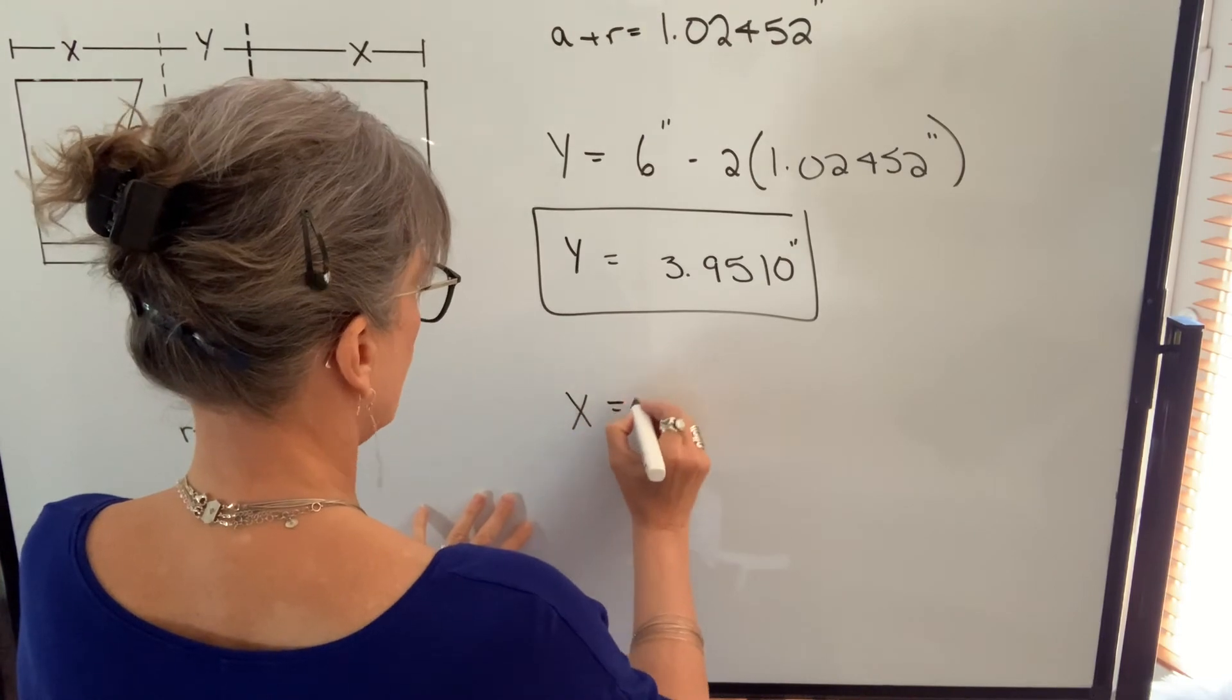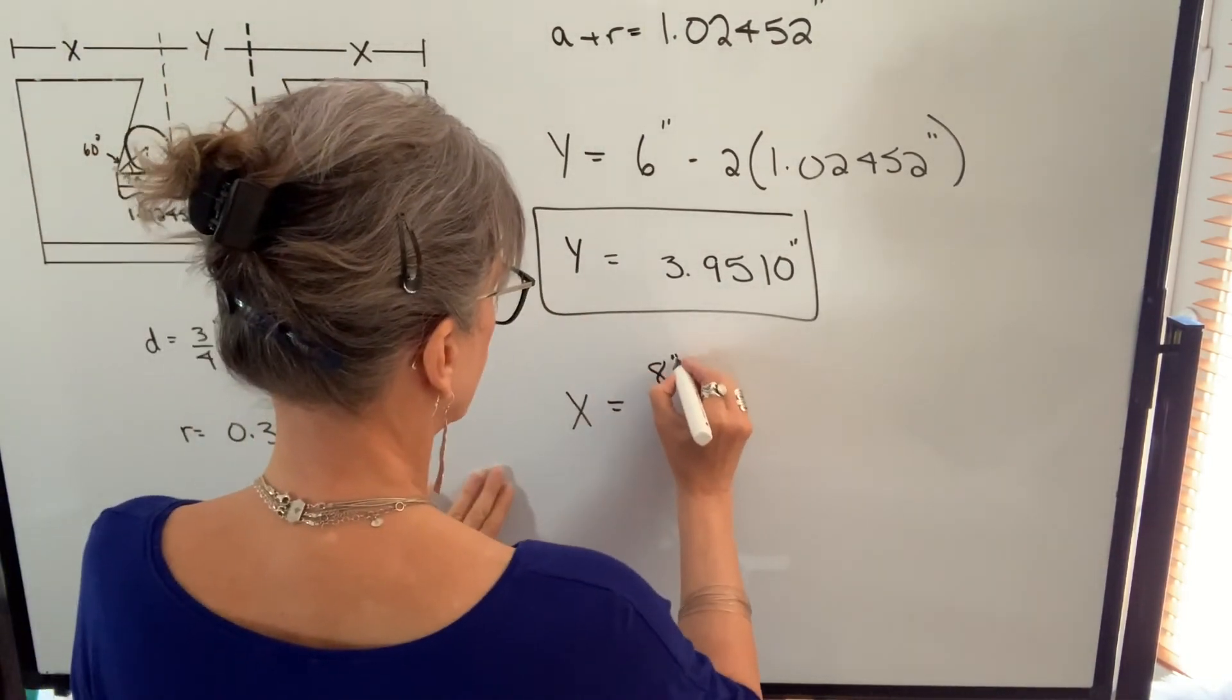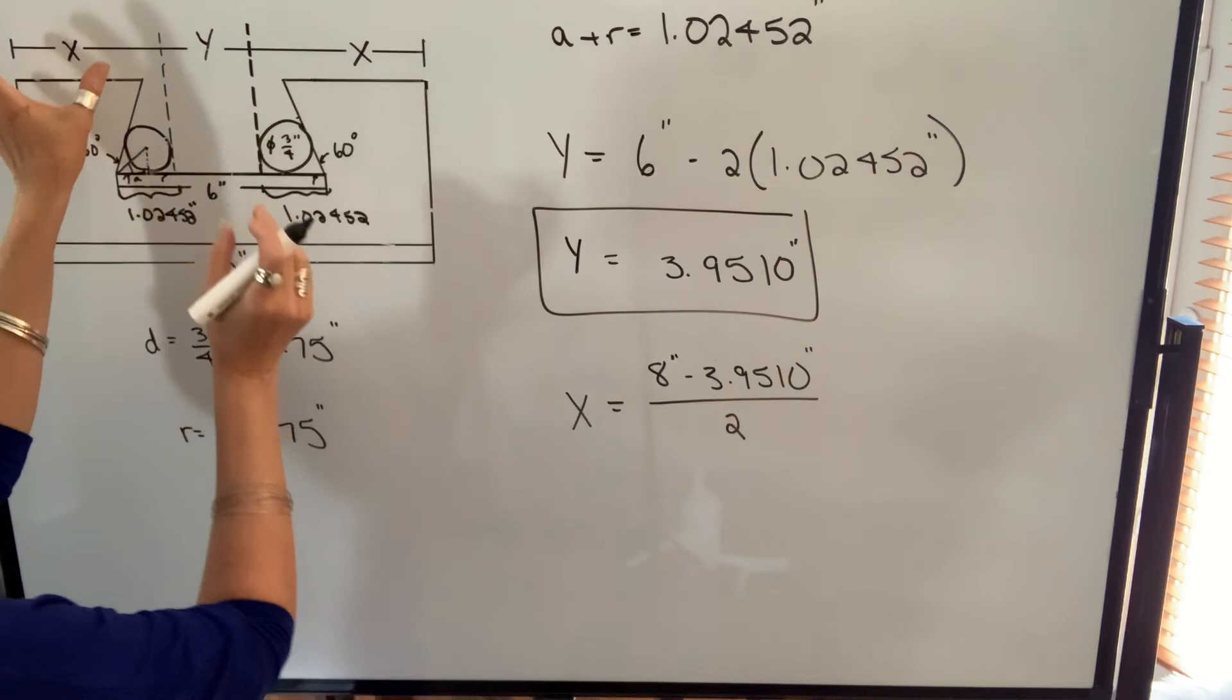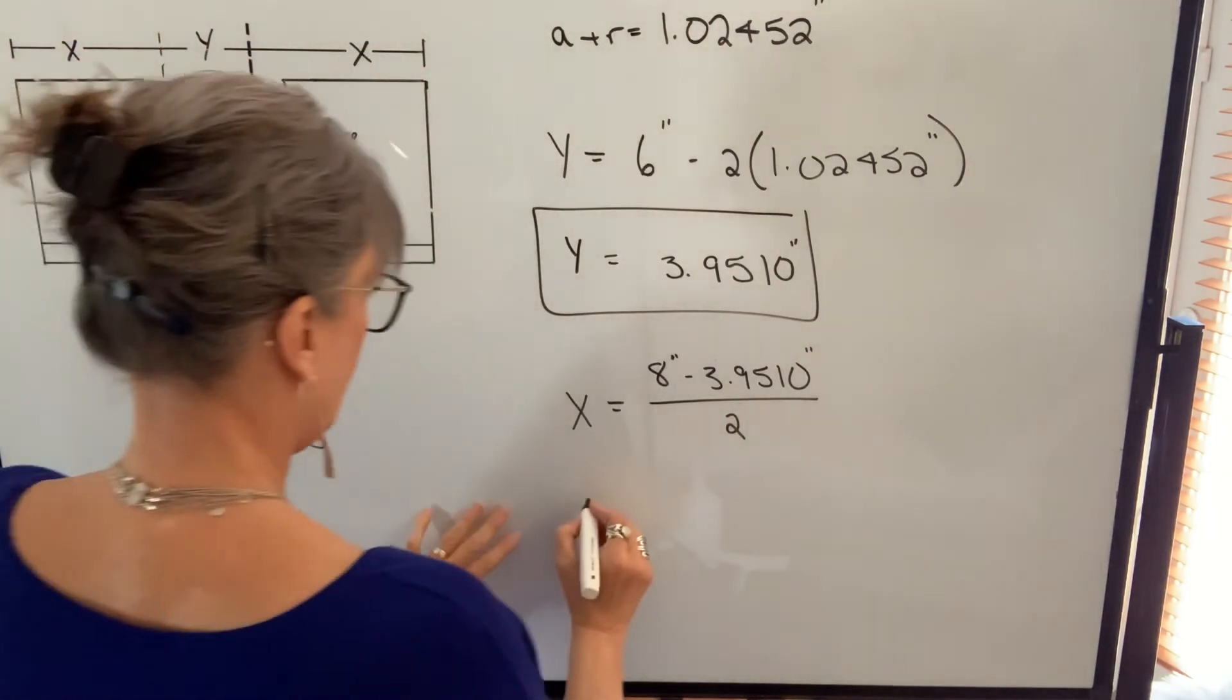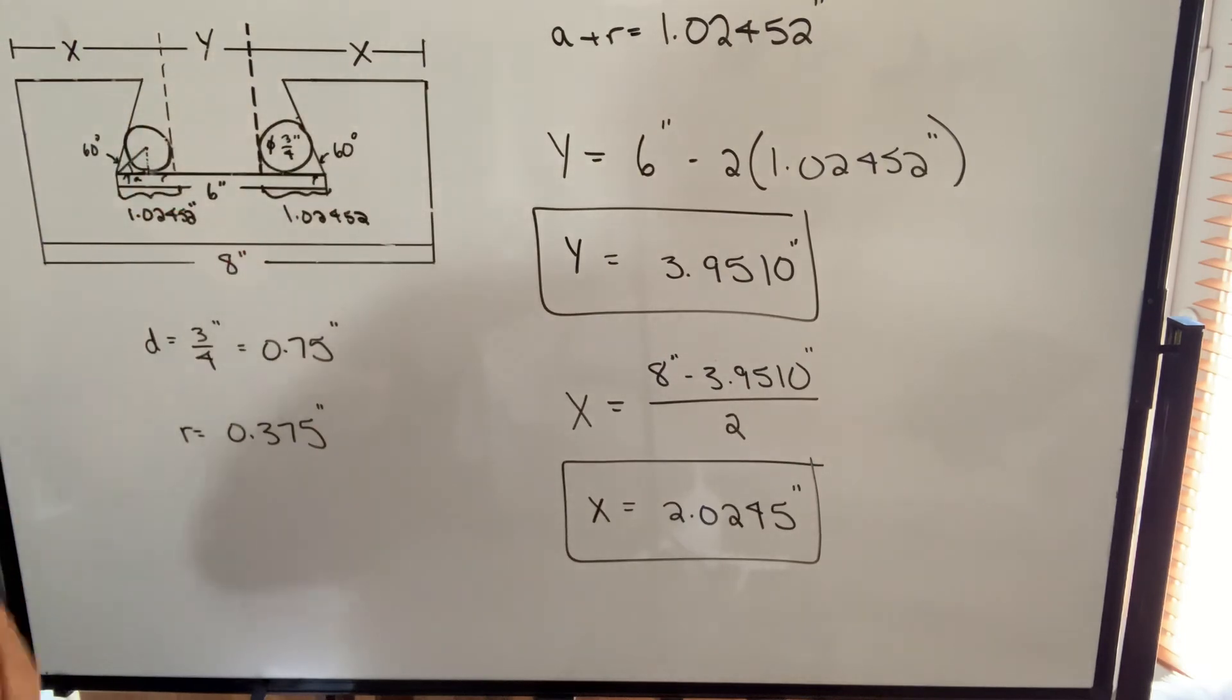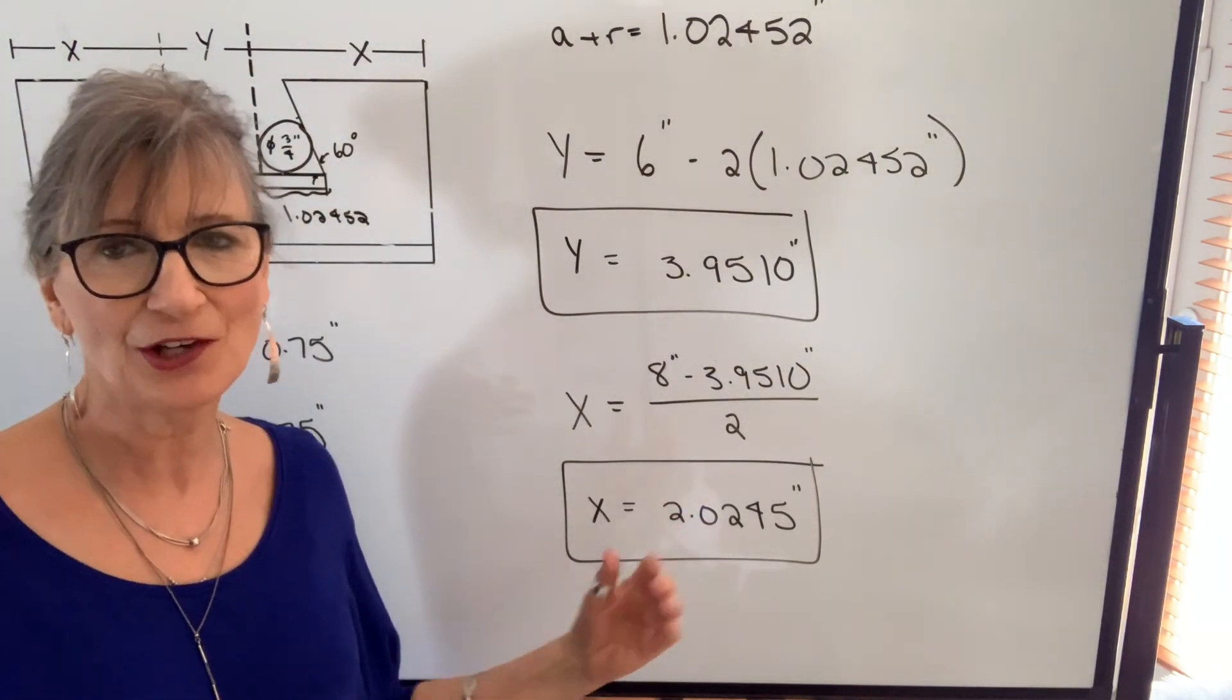In order to find X, we're going to take 8 inches, subtract Y, and divide by 2. Because this X plus this X will give us that difference. And when we do that calculation, we get 2.0245 inches, which obviously I have not drawn this to scale. But hopefully you can understand the calculations.